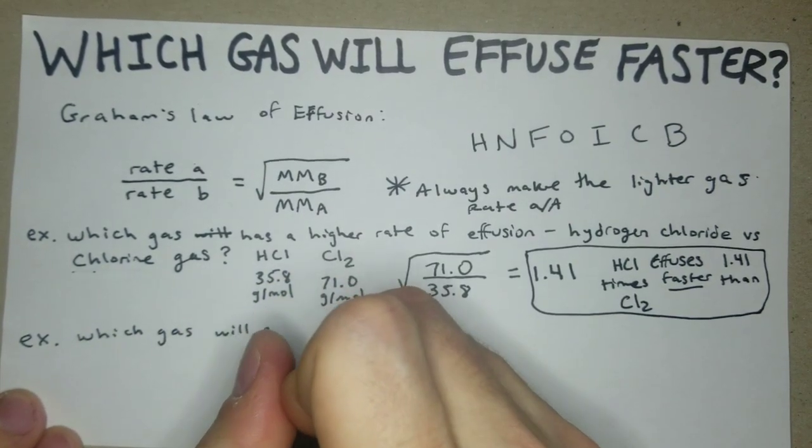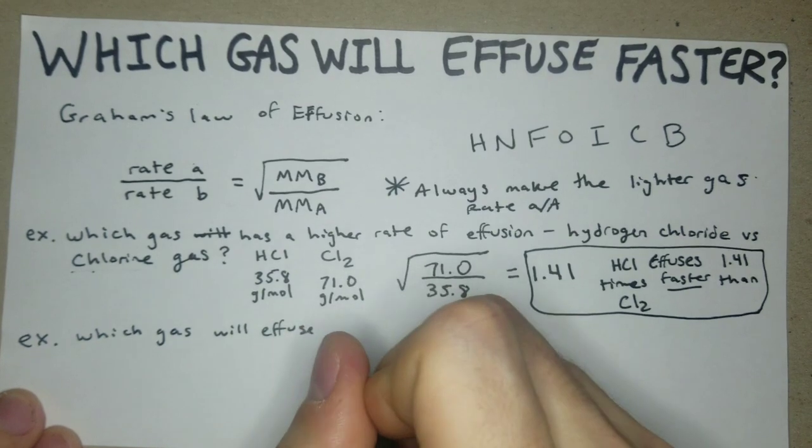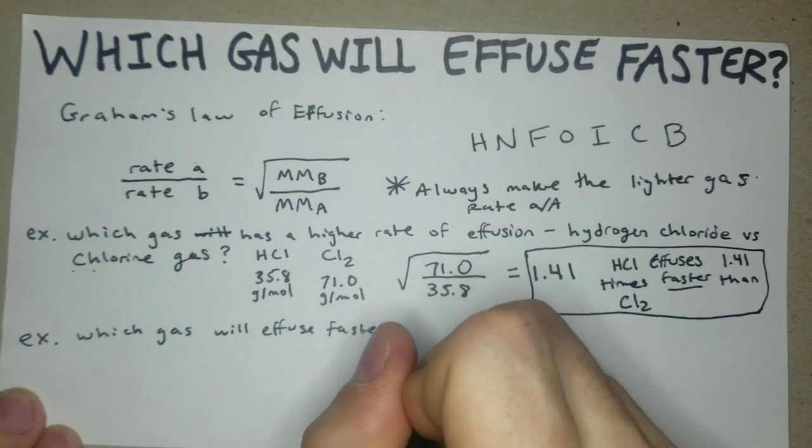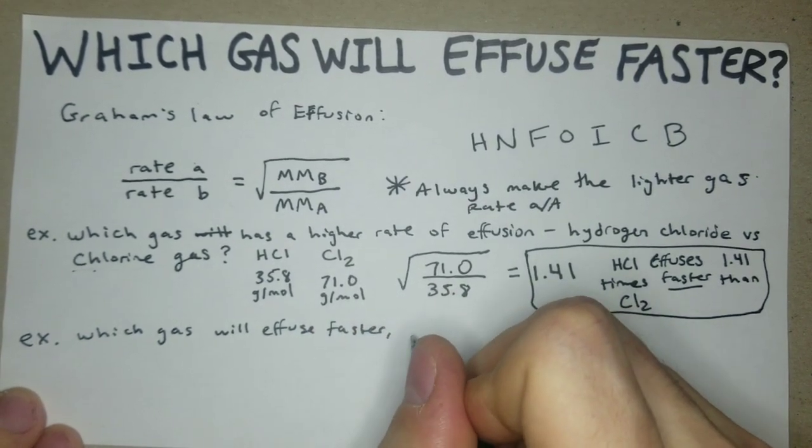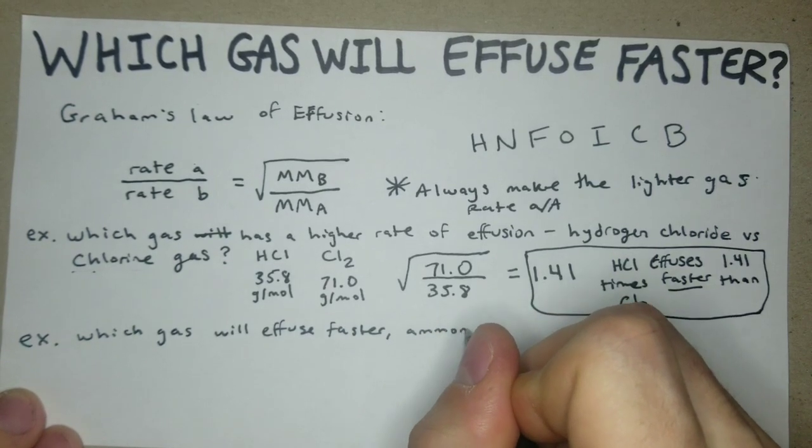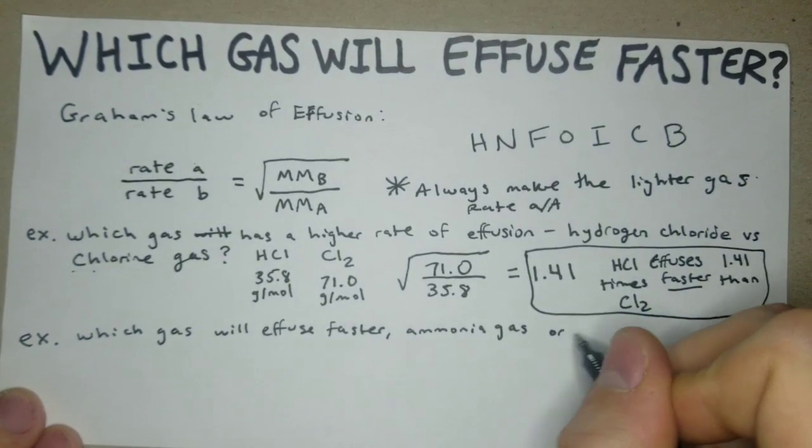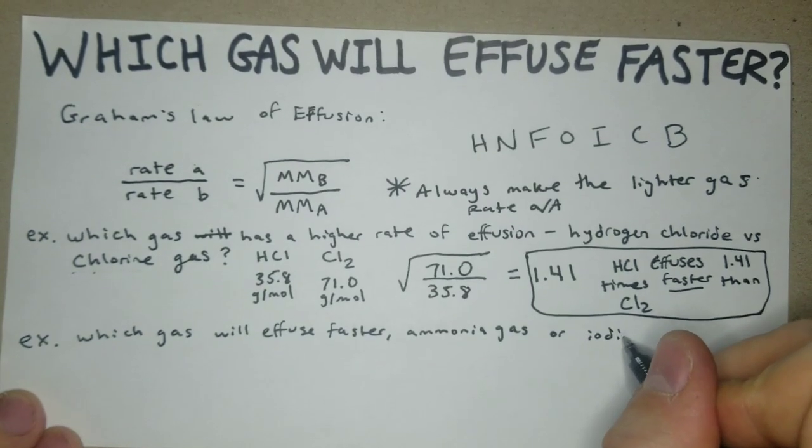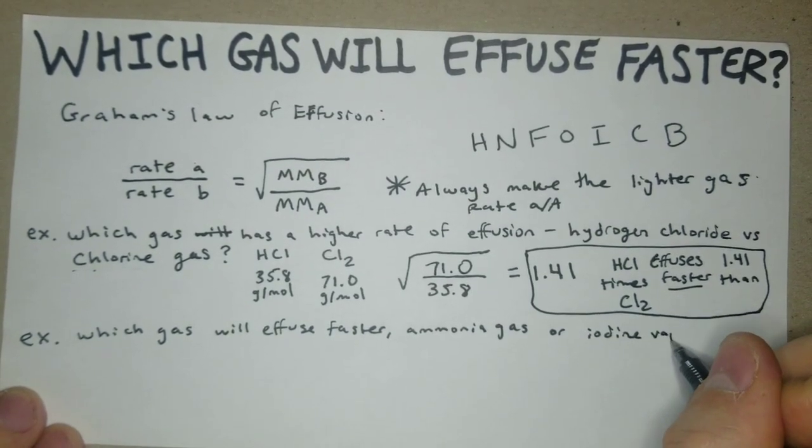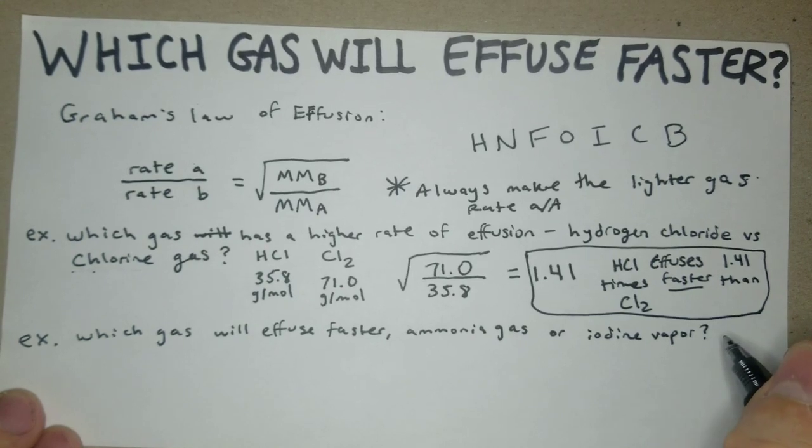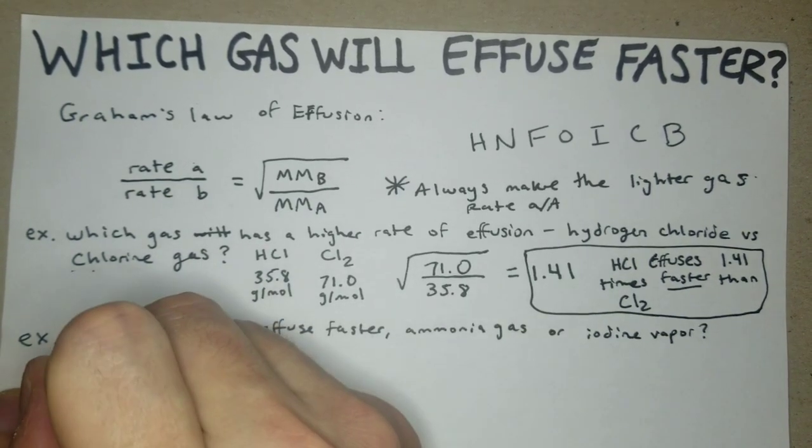Which gas will effuse faster, ammonia gas or iodine vapor? And then how many times faster?